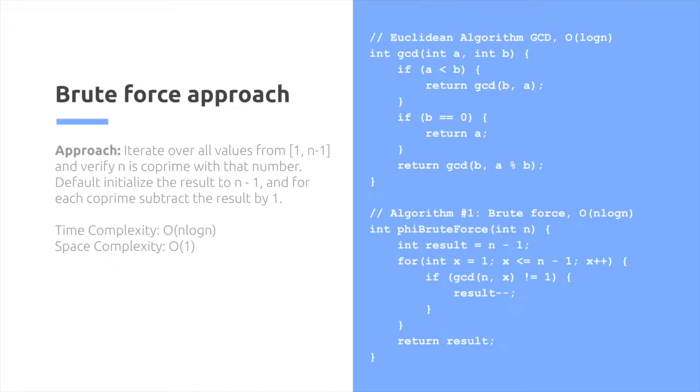So we're going to use the Euclidean algorithm of GCD, which is O of log n, as shown in a previous video. And then we're simply going to perform the loop, as we mentioned in the description of the algorithm. This is a relatively straightforward approach, but the time complexity could use a bit of an improvement.